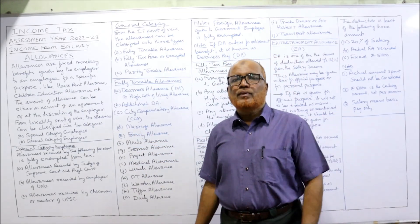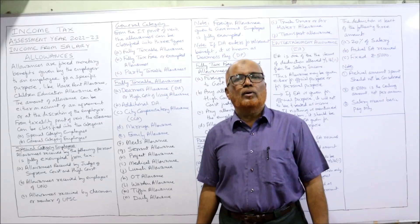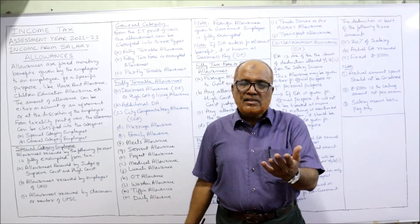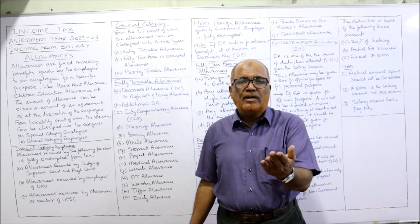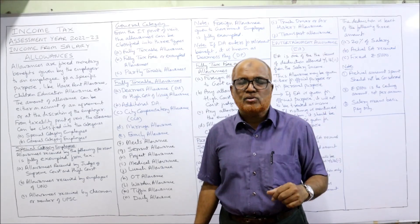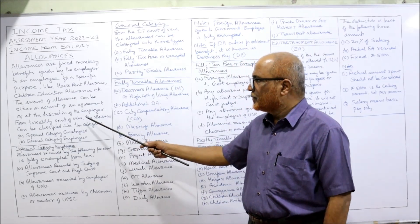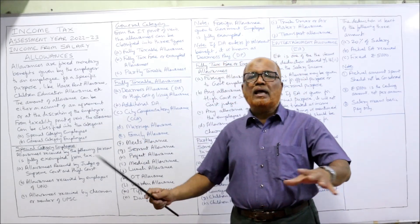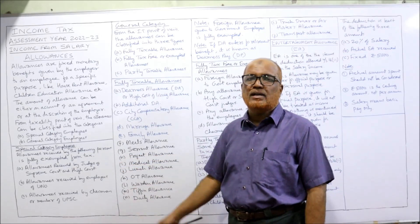The amount of allowance can be either based on an employment agreement or at the discretion of the employer. From a taxability point of view, all allowances can be categorized into special category employees and general category employees.